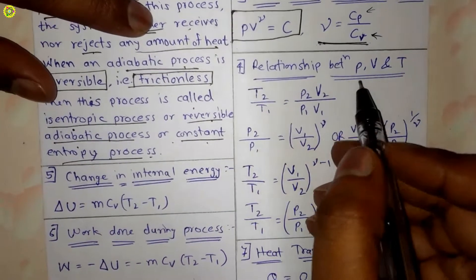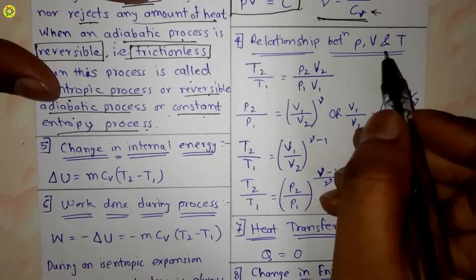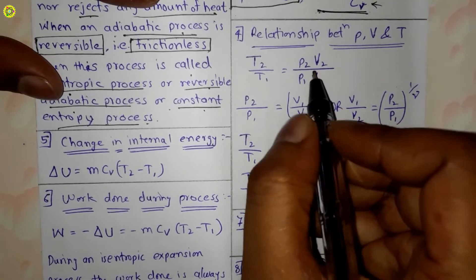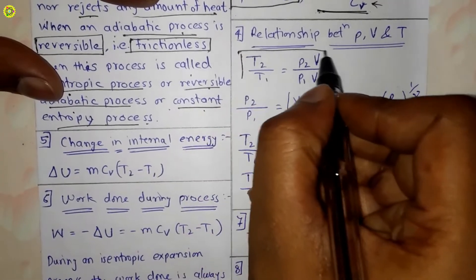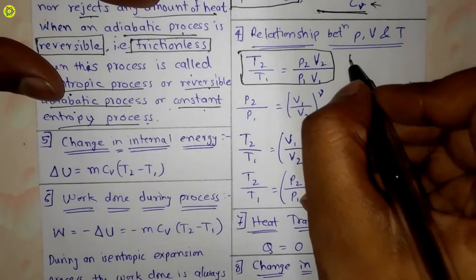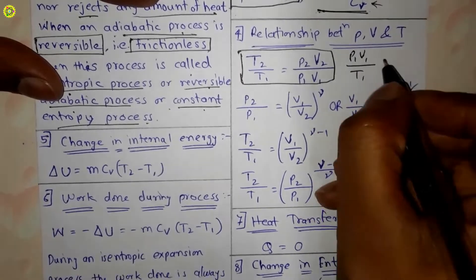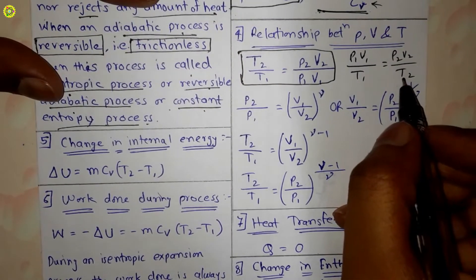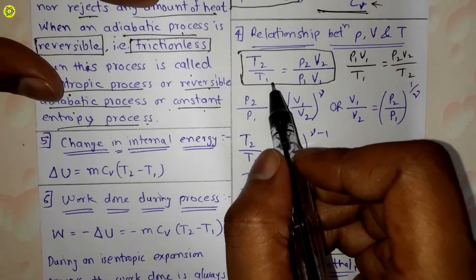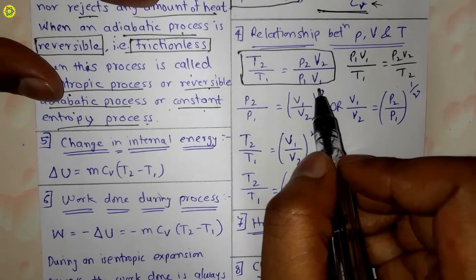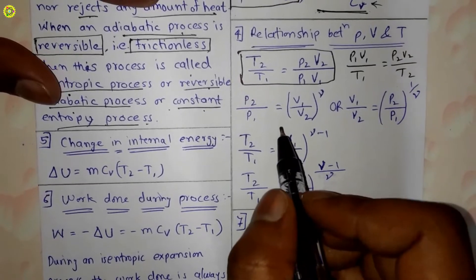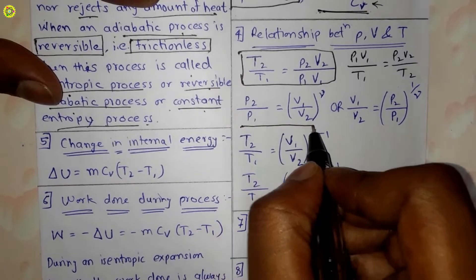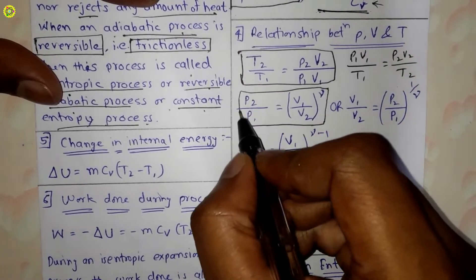Now we will see the relationship between pressure, volume, and temperature. The first relation is T2 upon T1 is equal to P2 V2 upon P1 V1, derived from the general gas equation P1 V1 upon T1 equals P2 V2 upon T2. The second relationship is P2 upon P1 is equal to V1 upon V2 raised to gamma.